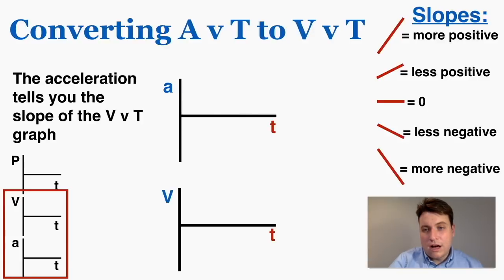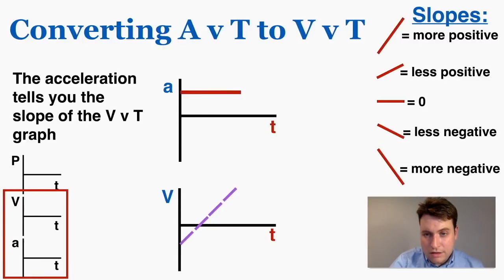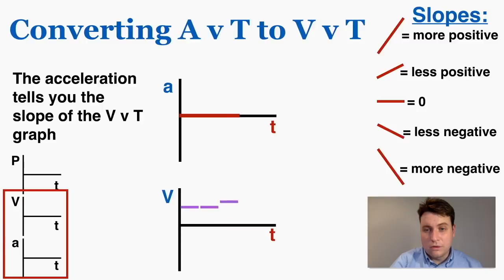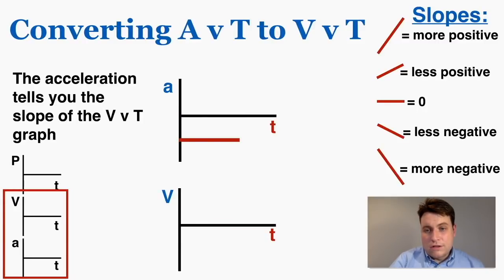Let's say you have an acceleration graph that is positive and constant. That means the slope of the velocity graph is going to be positive and constant, so I draw tangent lines that are positive and constant going up, and the velocity graph would look like a rising line. The acceleration graph does not tell you what velocity to start with, so you can start the velocity graph anywhere. If the acceleration is zero the whole time, the slope of the velocity graph is zero the whole time — a flat line. If the acceleration is negative, the slope of the velocity graph is constant and negative.